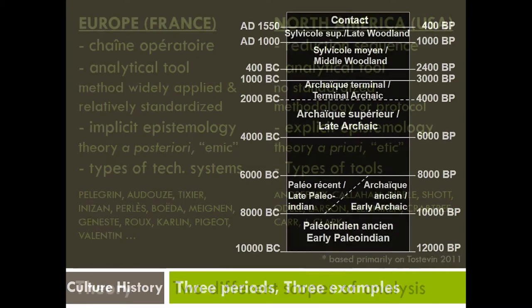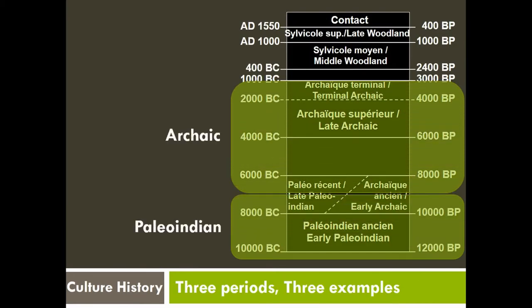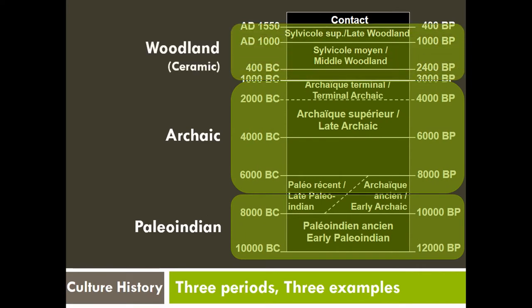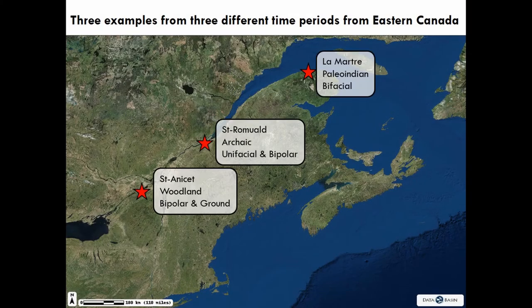What I want to do today is give you three examples of work that I've done in eastern North America, eastern Canada, Quebec, from three different periods that I hope will show you that we are able to combine these two approaches. We're very fortunate in Quebec that we speak French, so we can read a lot of the French work in French that may not be translated.